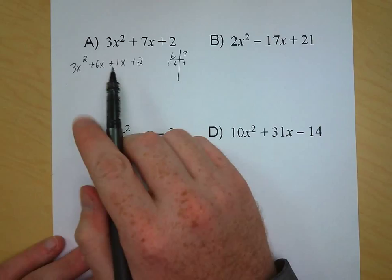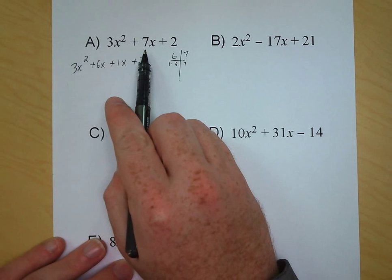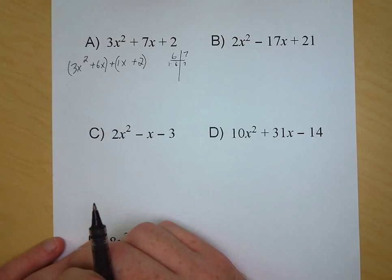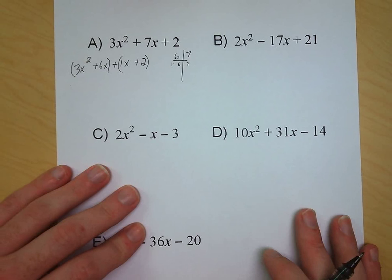When it comes to grouping, we're going to draw our grouping symbols around 3x squared and 6x, and around 1x and 2. Now we're going to pull out our common factors in each of these groups. In 3x squared plus 6x, our common factor is 3x, and what remains is x plus 2.